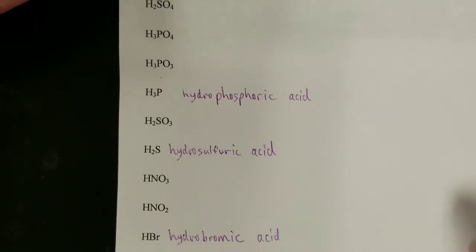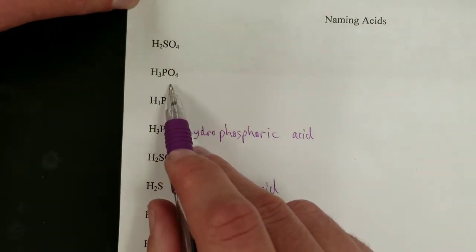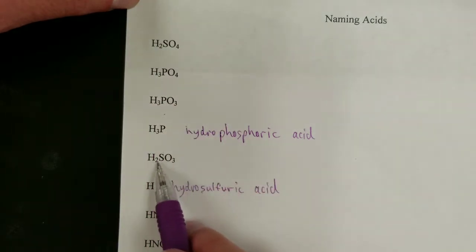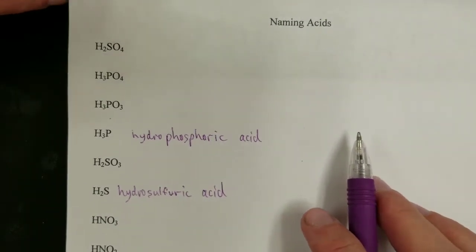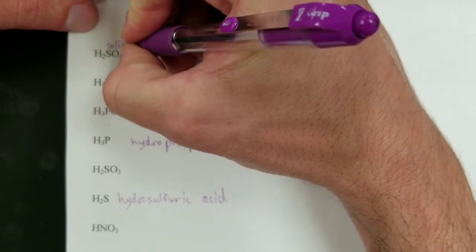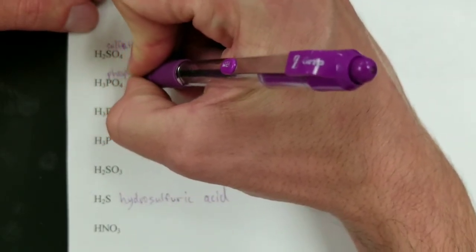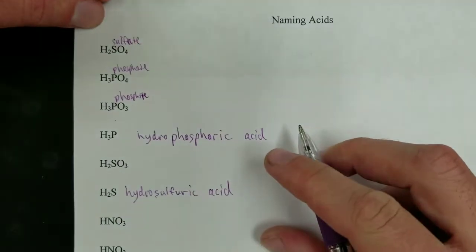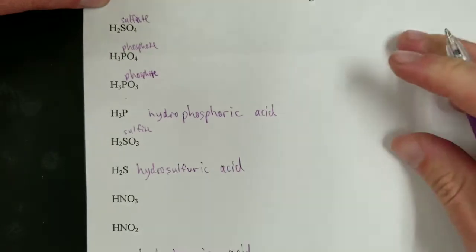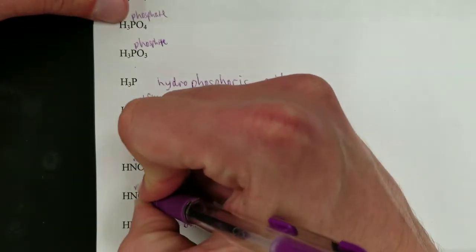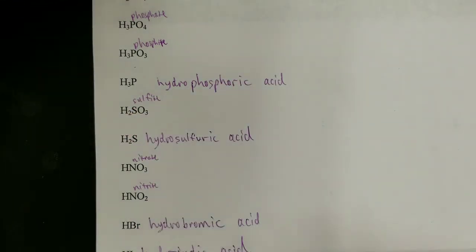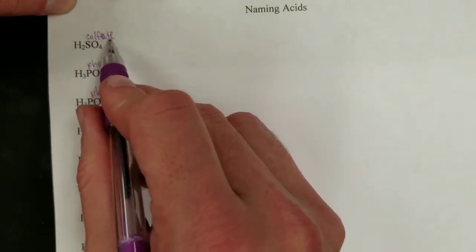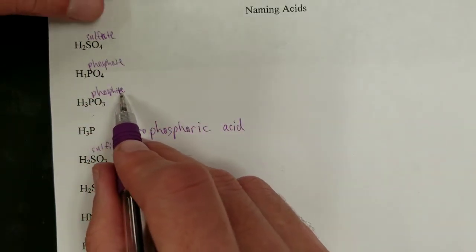For the ones that do have oxygen, the name is based on the name of the anion. These oxygen-containing acids include: sulfate, phosphate, phosphite, sulfite, nitrate, and nitrite. That determines how you're going to name the acid. If the anion ends in '-ate,' you call it one thing; if it ends in '-ite,' you call it something else.